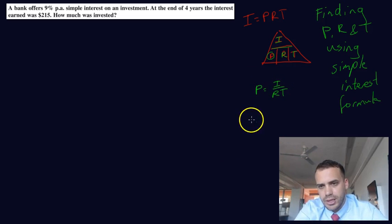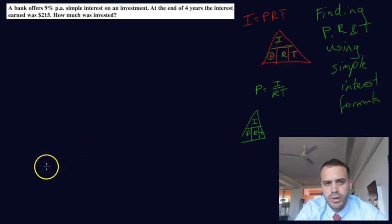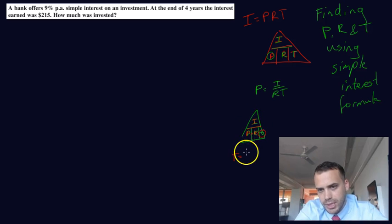Using our triangle method again. I, P, R, T. What if we wanted to find T? So T, circle T, T equals I divided by P times R. If they're next to each other, it's times. If they're above each other, it's divide. I divided by P times R. T equals I divided by P times R.